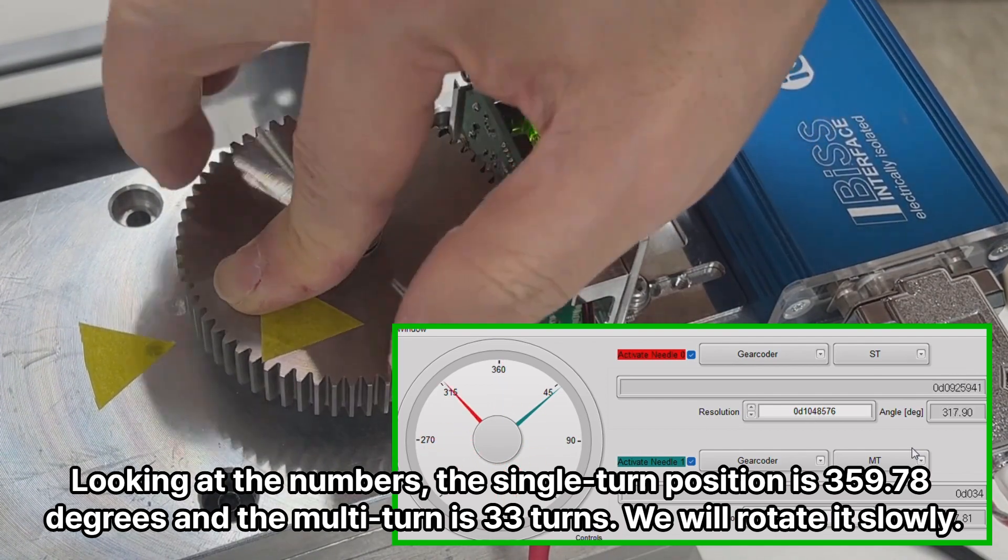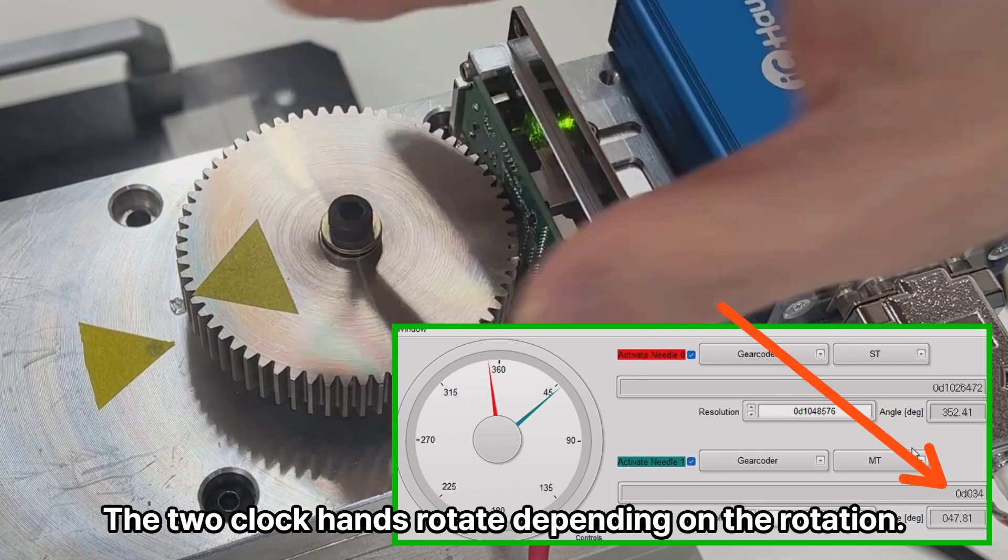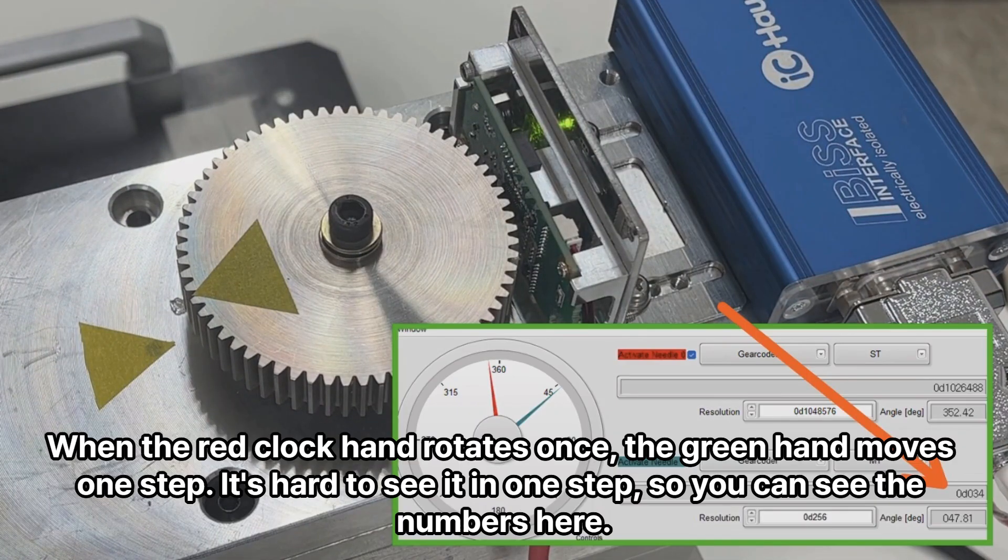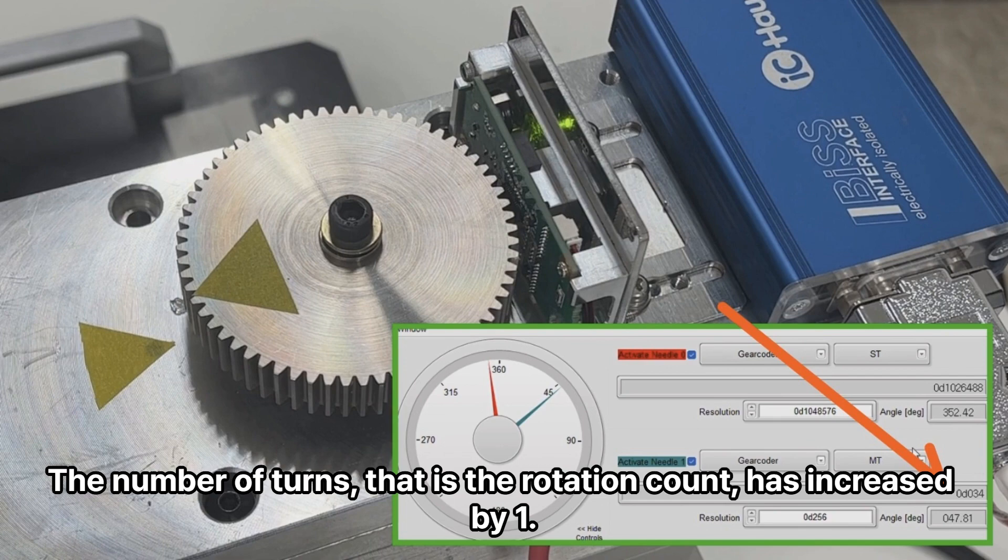We will rotate it slowly. The two clock hands rotate depending on the rotation. When the red clock hand rotates once, the green hand moves one step. It's hard to see it in one step, so you can see the numbers here. The number of turns, that is the rotation count, has increased by 1.